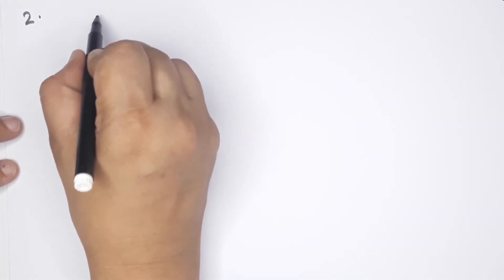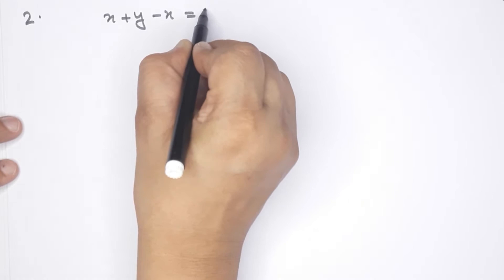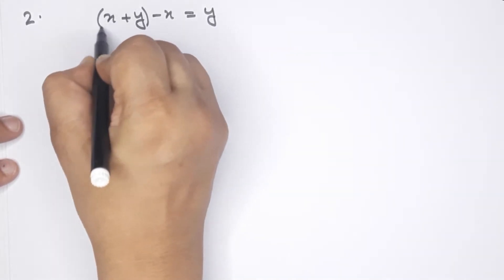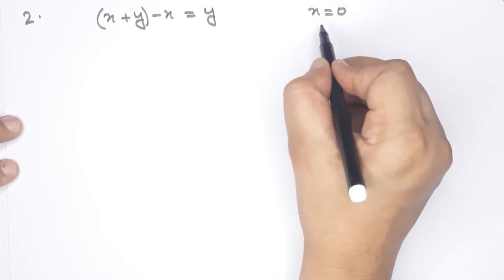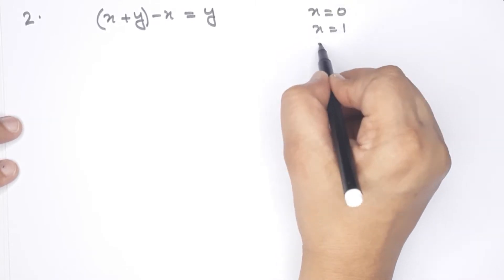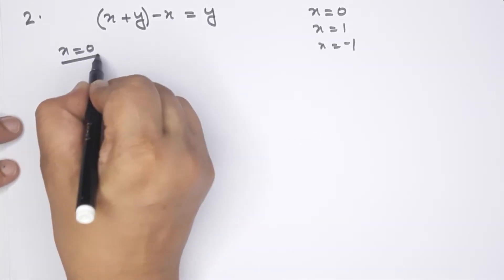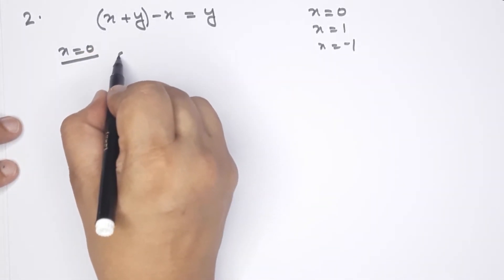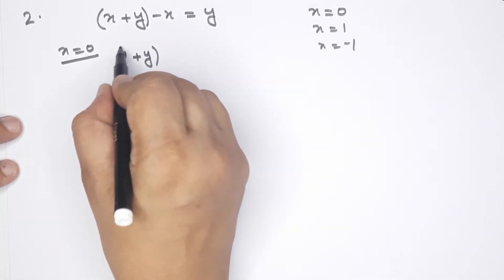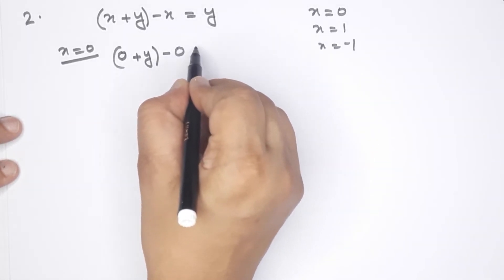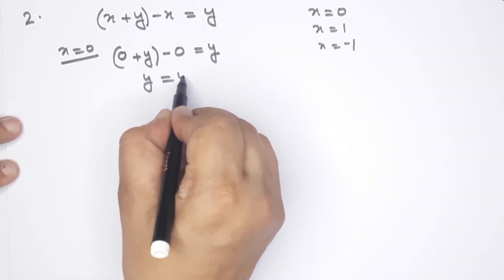The first property: x plus y minus x equals y. Now I'll take a group of numbers. Let x equal 0. When x equals 0, this becomes 0 plus y minus 0, which is equal to y. Okay — y is equal to y.